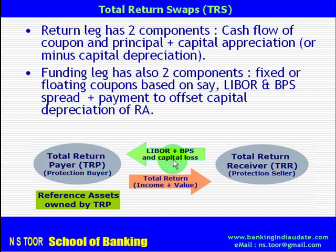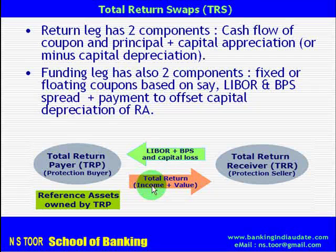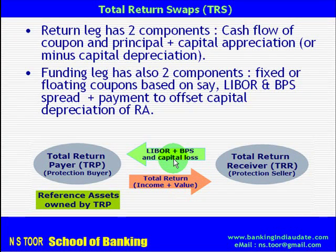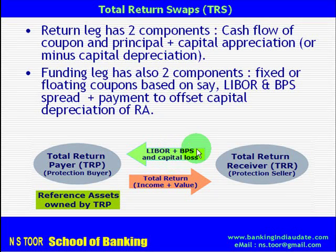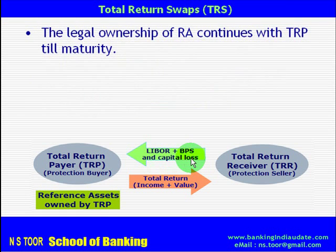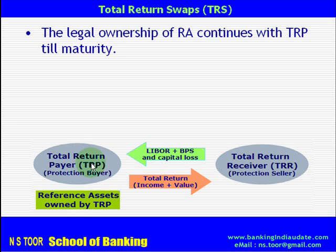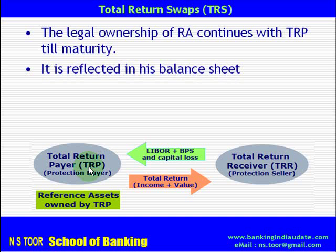To summarize the components: the Return Leg has two components — cash flow of coupon plus principal, and capital appreciation. The Funding Leg also has two components — a fixed or floating coupon based on LIBOR plus some basis points, and assurance against capital loss if any. As regards ownership, the legal ownership of the reference asset continues with TRP, the Total Return Payer, and it is part of his balance sheet.